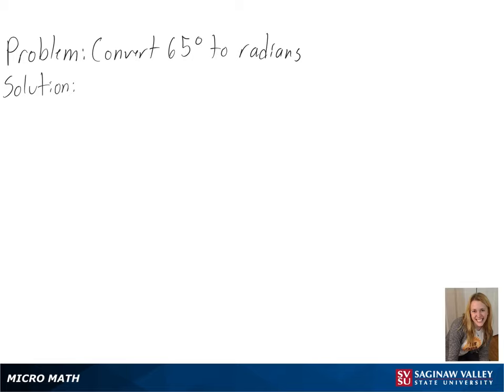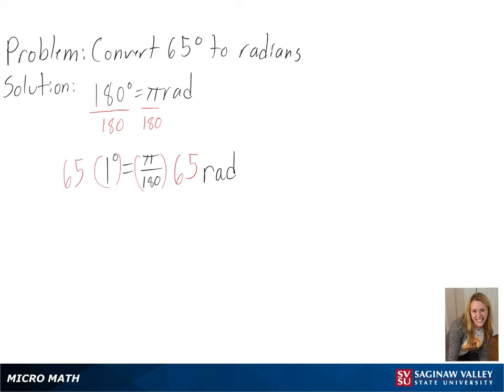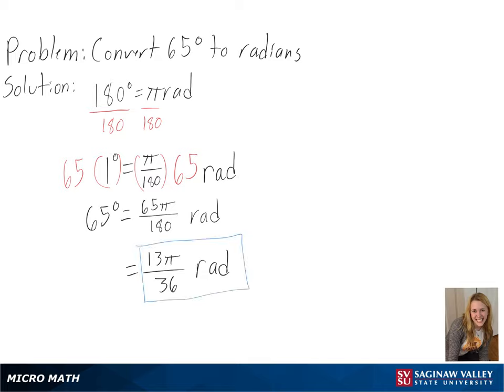Our problem is to convert 65 degrees into radians. To start out, we know that 180 degrees is equal to pi radians, so we can divide each side by 180 to know the amount of radians in 1 degree. And then we can multiply both sides by 65 to convert to 65 degrees. And after simplifying, we will get 13 pi over 36 radians as our final answer.